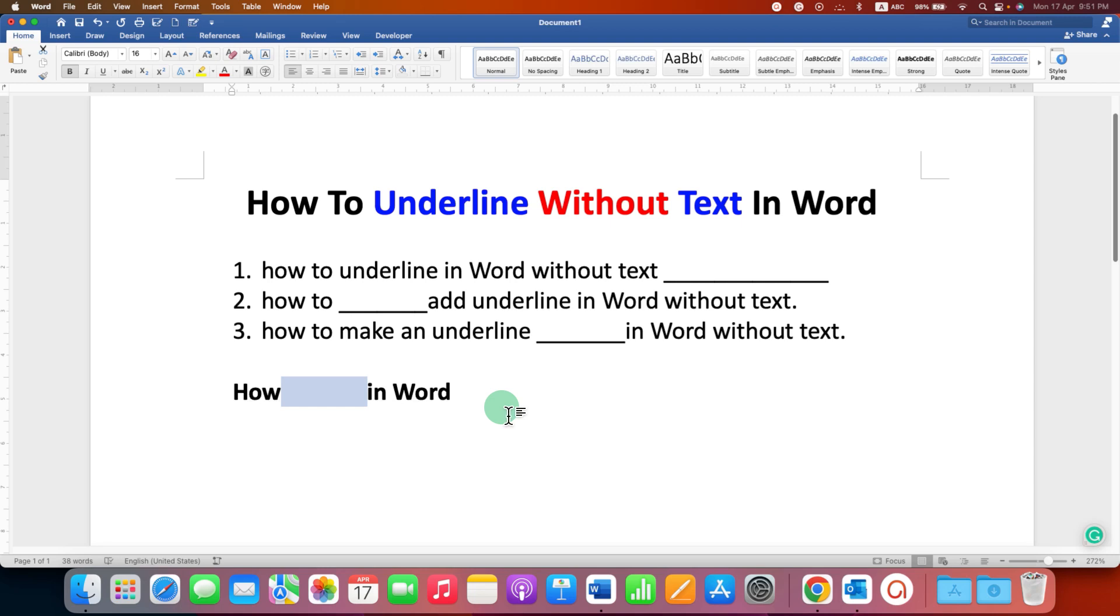After selecting the blank space, either you can go to the underline option here to give the underline and if you want to change the underline type, click on the drop down and you can also increase the line thickness.